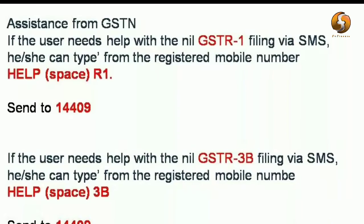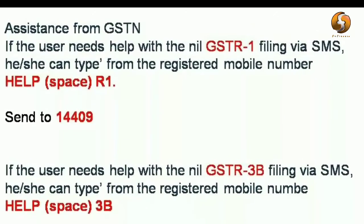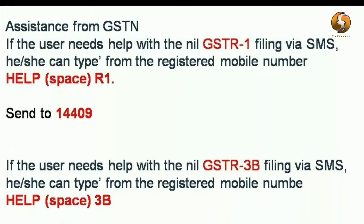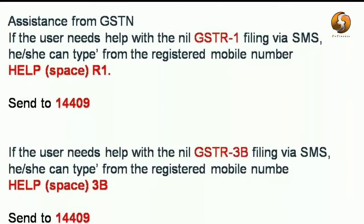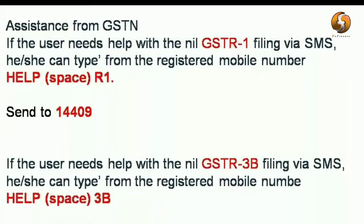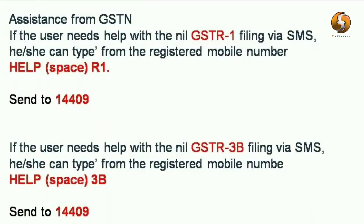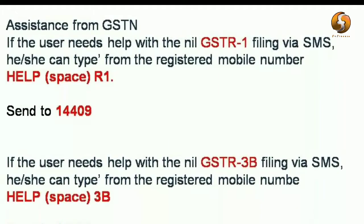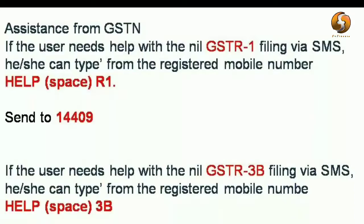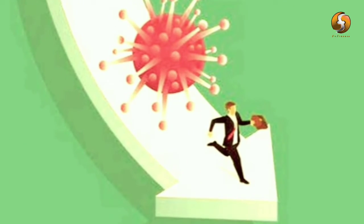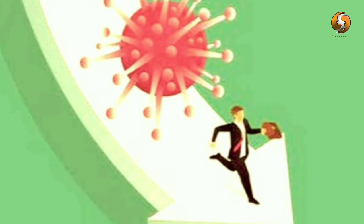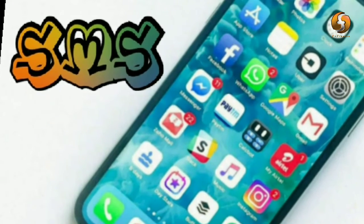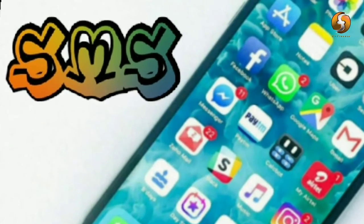If you need any help with nil GSTR-1 filing via SMS, type from your registered mobile number: HELP space R1 and send to 14409. Similarly for GSTR-3B, send: HELP space 3B to 14409. Due to the current situation of COVID-19, most businesses are at a standstill — no purchases and no sales — so if you need to file a nil GST return, you can do this filing through SMS.